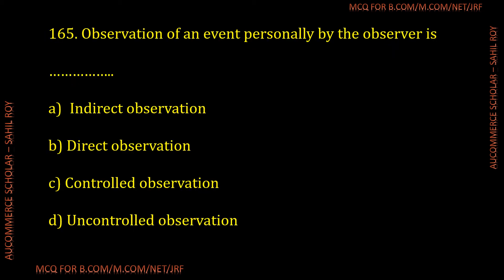Question number 165: Observation of an event personally by the observer is called what? The options are indirect observation, direct observation, controlled observation, and uncontrolled observation. The correct answer is direct observation — observation of an event personally by the observer is called direct observation. Option B is the correct answer.